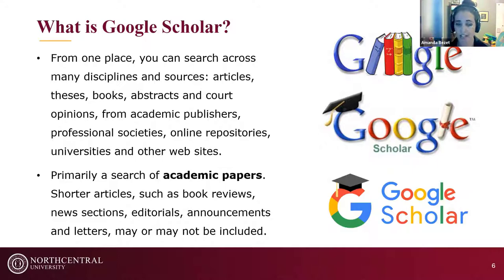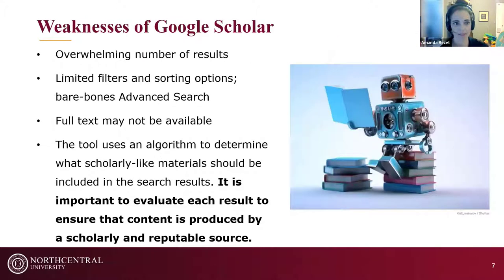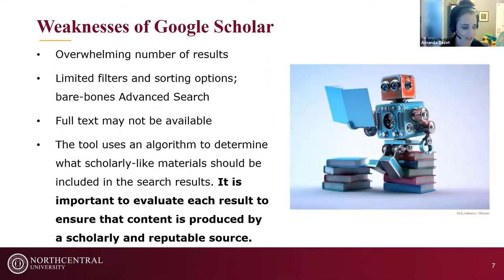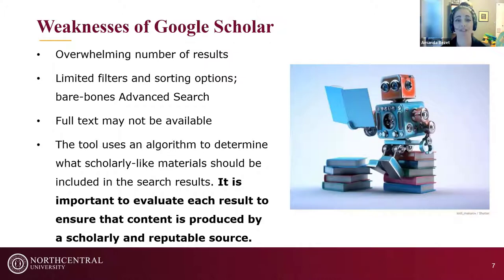Shorter articles such as book reviews, news sections, editorials, announcements, and letters found in academic journals may not be included in Google Scholar. Some weaknesses: it provides an overwhelming number of search results with limited filtering and sorting options. There are no limiters for full text or strictly peer-reviewed journals as you would find in a library database. The advanced search is also very bare bones compared to what's available in library databases.